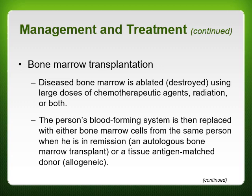Another treatment option in some cases is bone marrow transplant. Diseased bone marrow is destroyed using large doses of chemotherapeutic agents, radiation, or both. The person's blood-forming system is then replaced either with their own bone marrow cells taken when they were in remission — called autologous bone marrow transplant — or with a tissue antigen-matched donor's marrow, which is called allogenic.